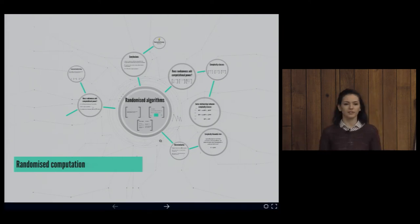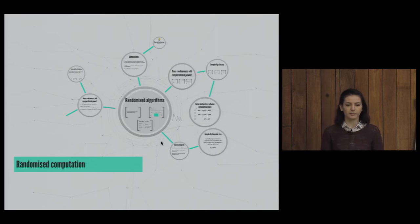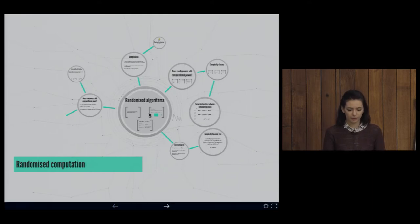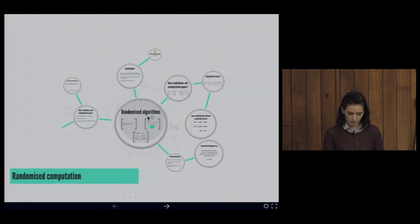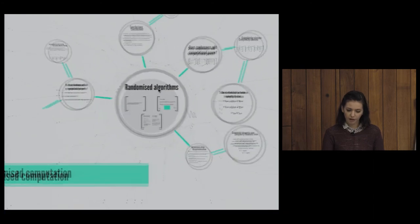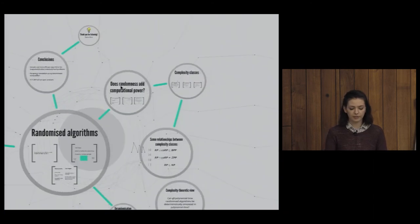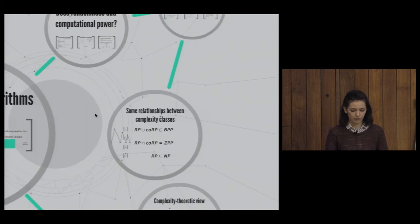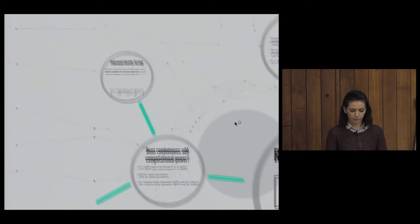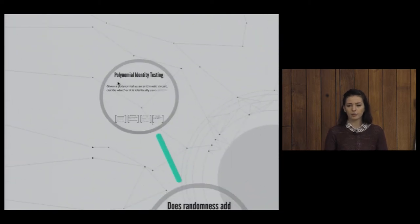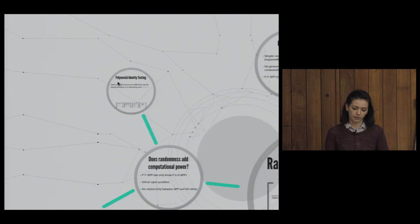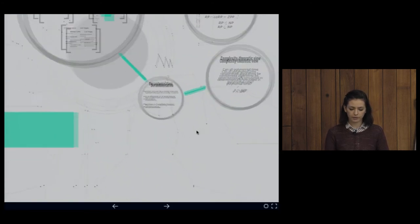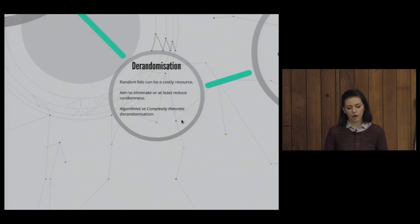This talk is on randomized computation, exploring whether randomness adds any computational power. We will first look at randomized algorithms, then at complexity classes and their relationships. We will then look at polynomial identity testing, a problem for which we know a probabilistic polynomial solution but not a deterministic one, and finally derandomization — how probabilistic algorithms could be used to obtain efficient deterministic ones.